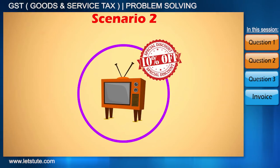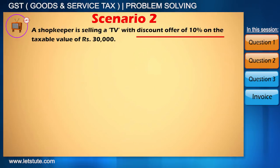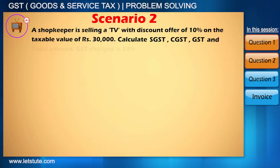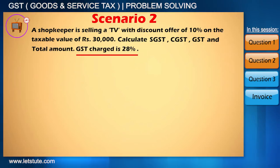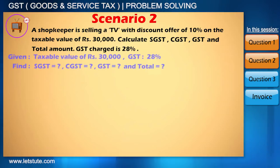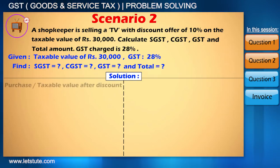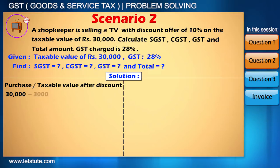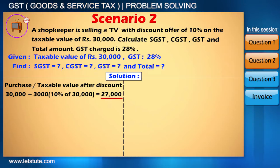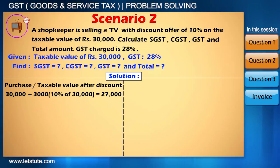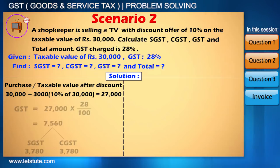Friends, sometimes we get discount offers on a product. Now suppose the shopkeeper is giving you a discount of 10% on that TV. Can you now calculate the GST and the total amount to be paid? The GST rate will be 28% only — that is not going to change. But now the taxable value, or the selling price, of the TV will be reduced by 10%, that is 30,000 minus 3,000, which is 27,000. So the taxable amount becomes 27,000 and the GST and total price will be calculated on the basis of 27,000.